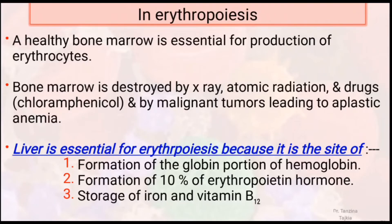A healthy bone marrow is essential for production of erythropoiesis. If bone marrow is destroyed by X-ray, atomic radiation, drugs, or malignant tumor, it leads to aplastic anemia. The liver is essential for erythropoiesis because it is the site of formation of the globin portion of hemoglobin; secondly, formation of 10% of erythropoietin hormone; and thirdly, it is the storage organ for iron and vitamin B12.